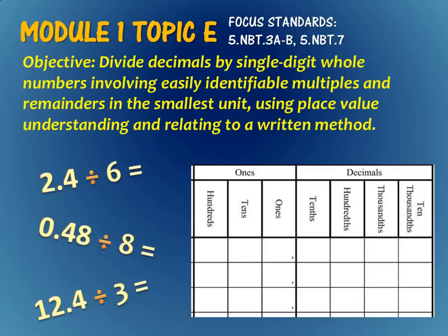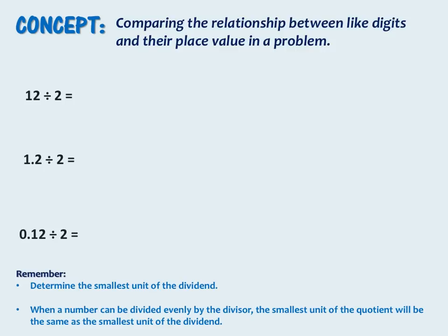The objective of this lesson is to divide decimals by single-digit whole numbers using place value understanding and relating to a written model. First we're going to look at how the place value of the digits in the problems compares with the place value of the digits in the quotients.